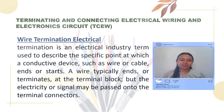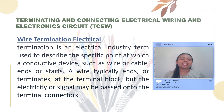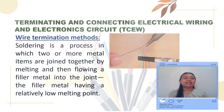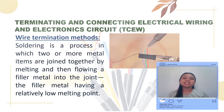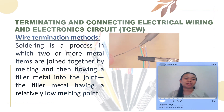Wire termination: electrical termination is an electrical industry term used to describe the specific point at which a conductive device such as a wire or cable ends or starts. A wire typically ends or terminates at the terminal block, but the electricity or signal may be passed on to the terminal connectors. Wire termination methods consist of two: soldering and crimping. Soldering is a process in which two or more metal items are joined by melting and flowing a filler metal into the joint, with the filler metal having a relatively low melting point.